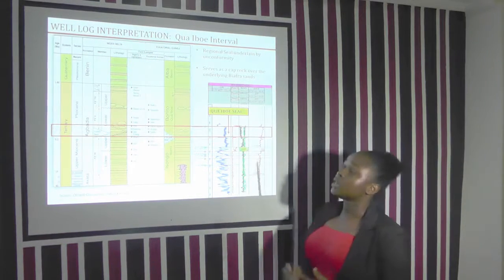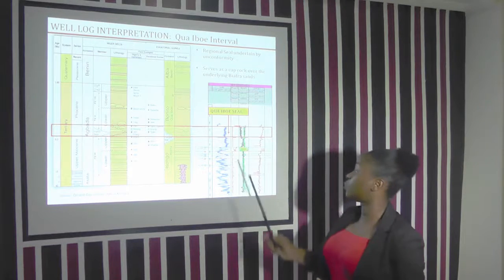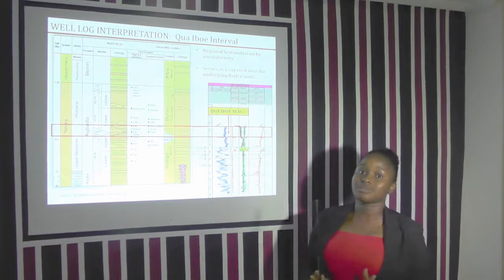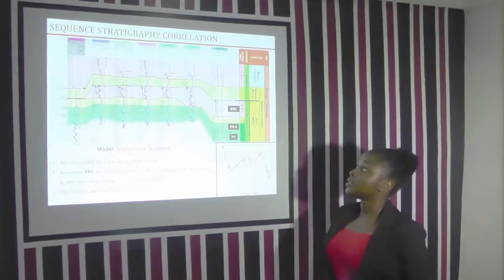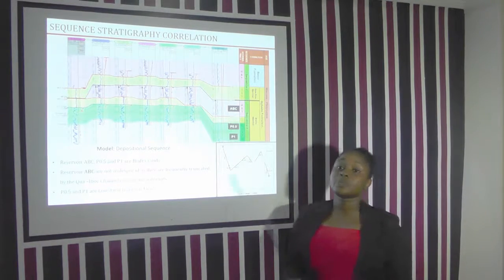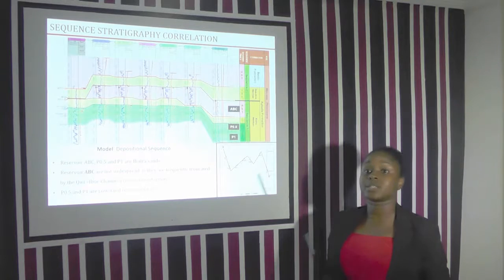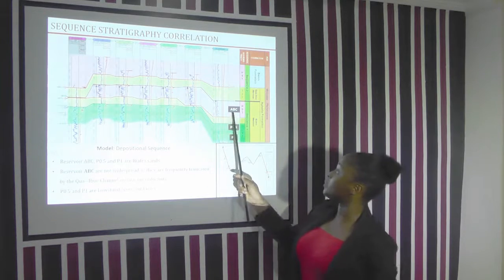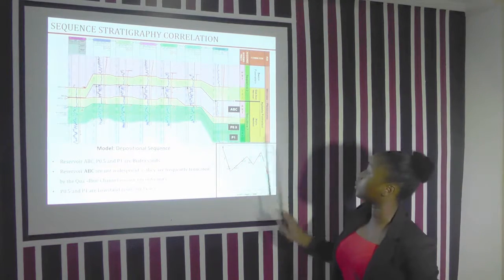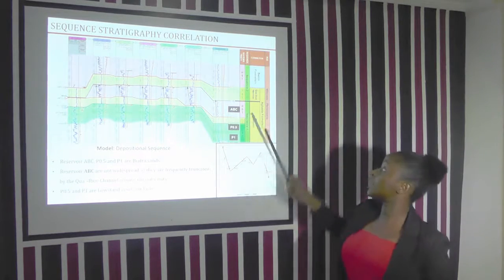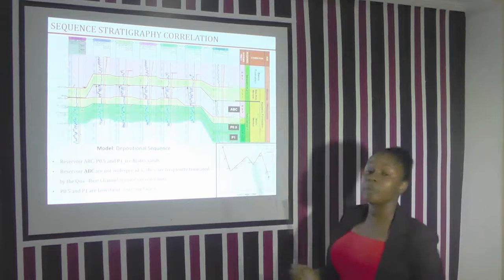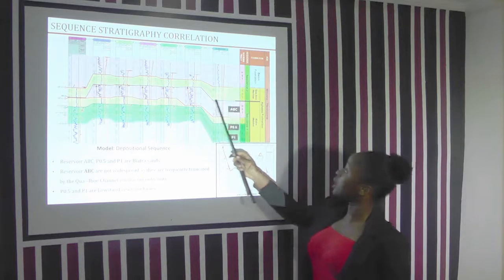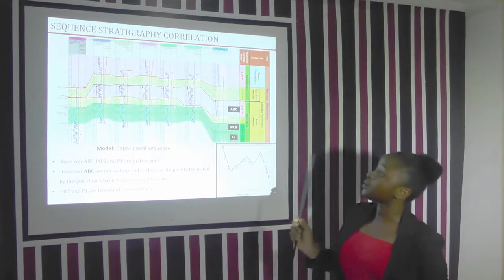The Qua Iboe interval is Paleocene in age, and we were able to delineate it on our log, tied to our sequence stratigraphy framework. The depositional sequence model was used, of which we had two sequences. In the first sequence we had our reservoirs ABC, P0.5, and P1. In the second sequence we had our Qua Iboe member and the Agbada Formation. The two sequences were separated by an erosional unconformity which truncated the section.